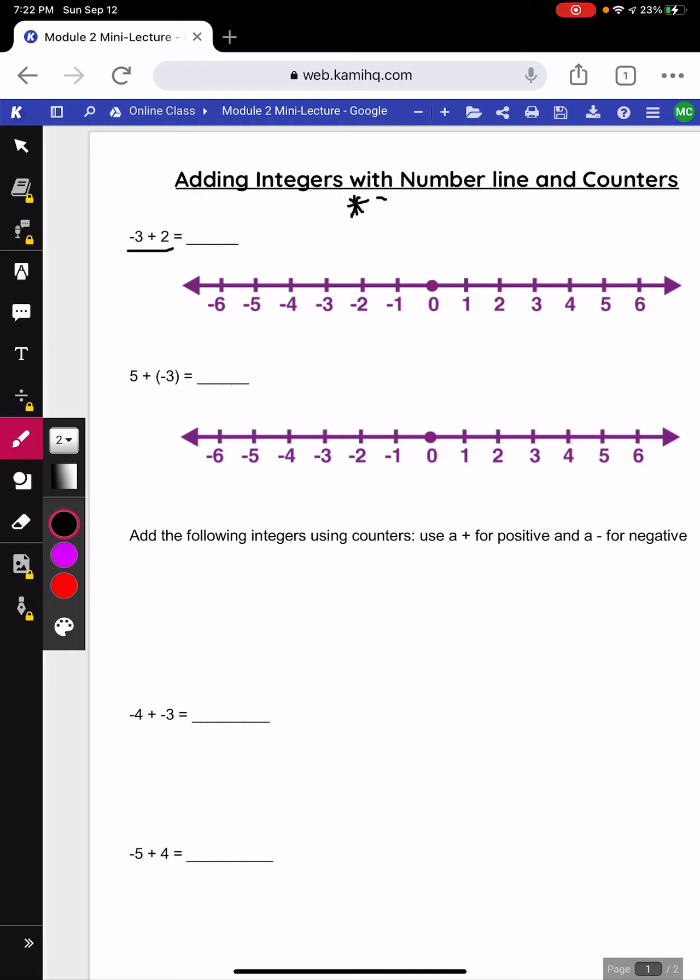Now the most important thing when we are doing these is that we always start at 0. For example, for this first one we're going to start at 0 and you go to the first number. I'm going to draw an arrow to negative 3 and stop there.